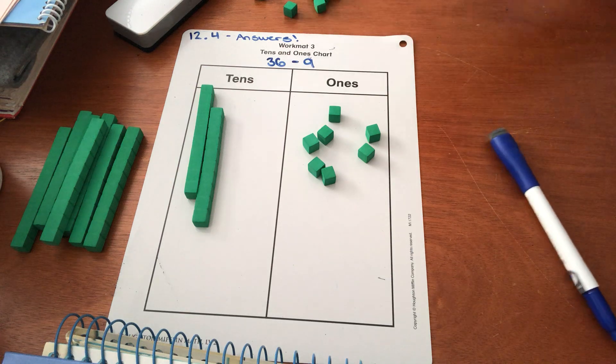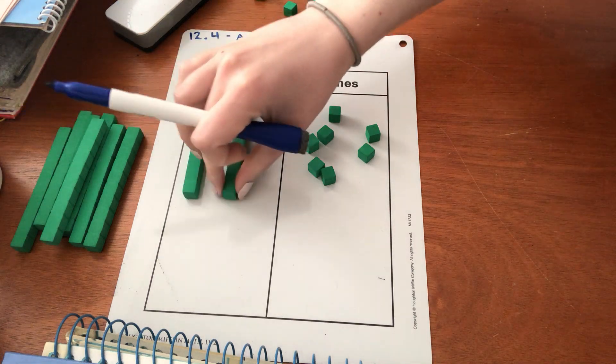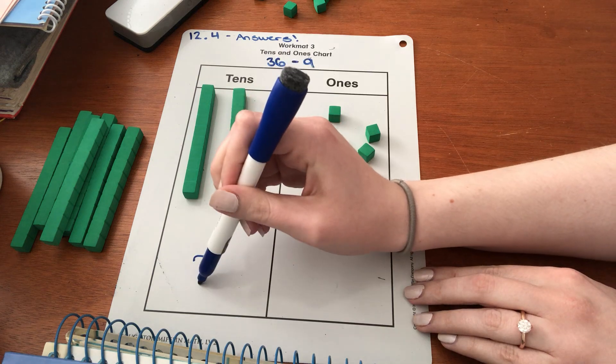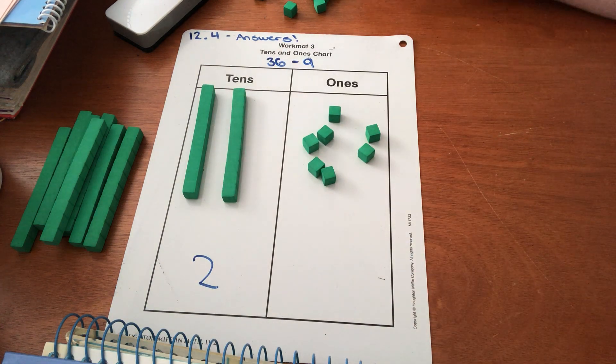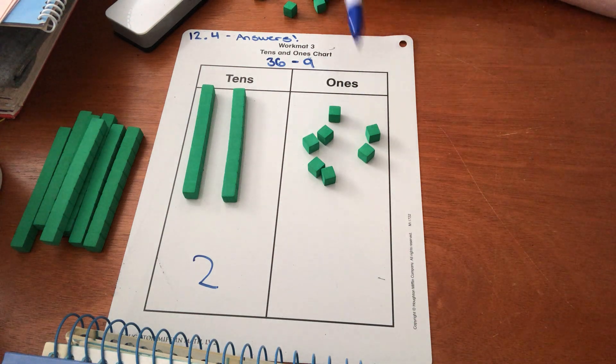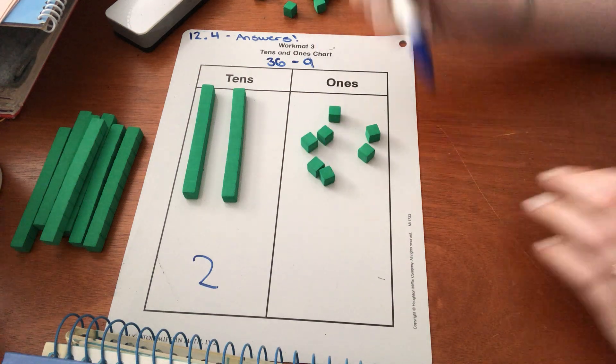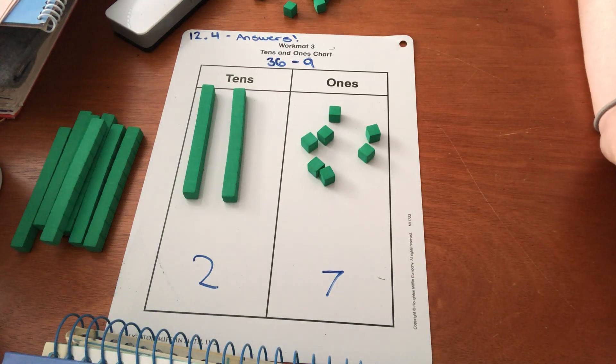Put all of those over here. Cool. So now we need to figure out how many tens and how many ones. How many tens do we have over here? Wonderful. Two. Two tens. And how many ones are here? Let's count together. One, two, three, four, five, six, seven.